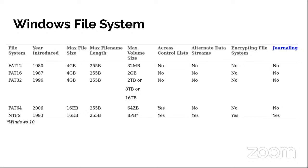The boot process for operating systems: the kernel is at the core of an operating system and is responsible for communication between software and hardware. When the computer is powered on, it executes code stored in ROM, referred to as the BIOS, which initializes system devices. Bootstrapping is the process of running a small piece of code to activate other parts of the OS during boot. In modern computers, the Unified Extensible Firmware Interface, or UEFI, has replaced BIOS and does the same job.